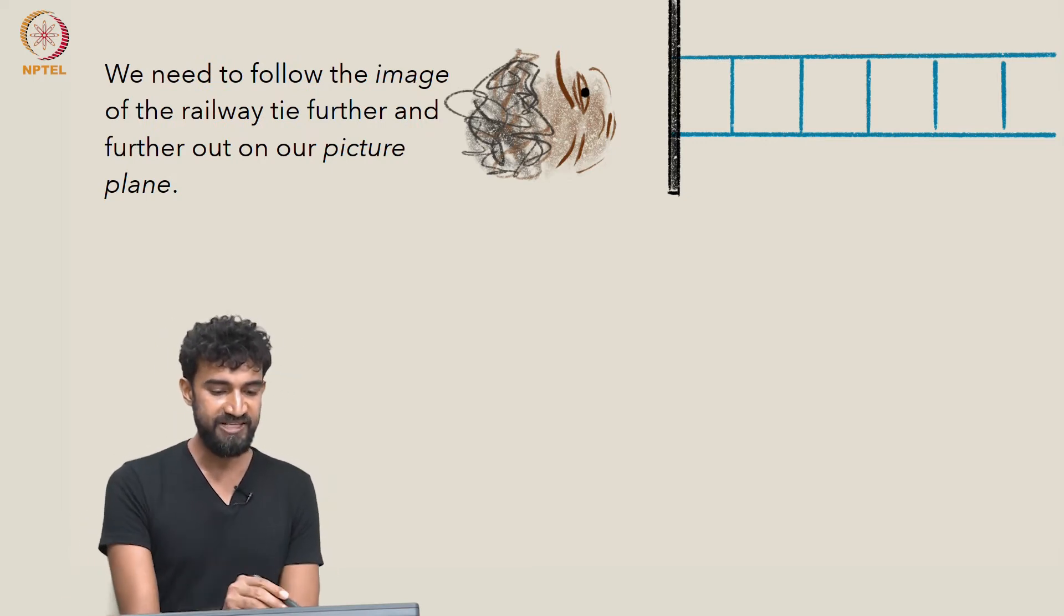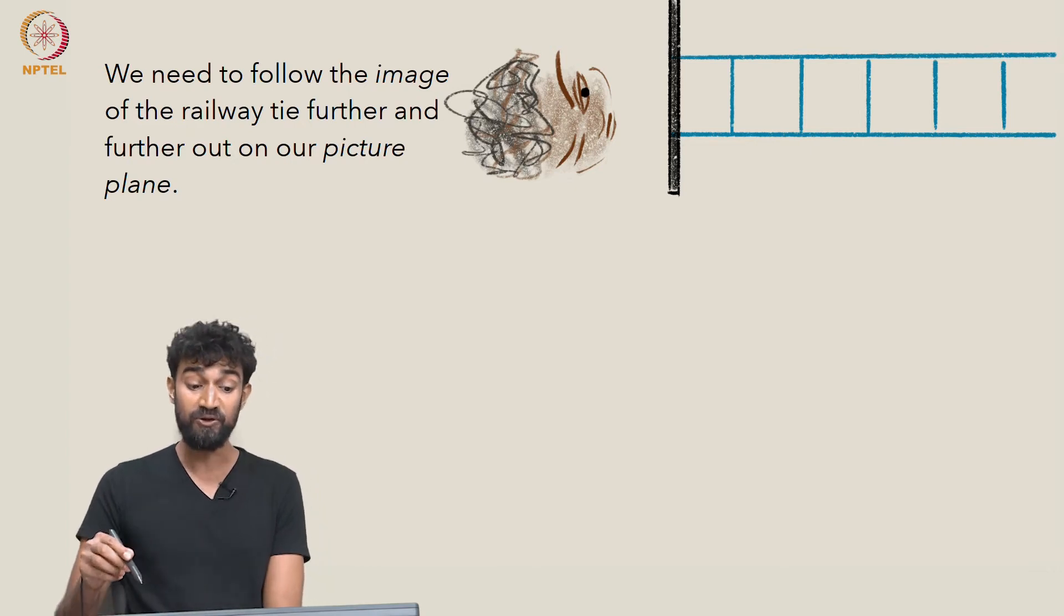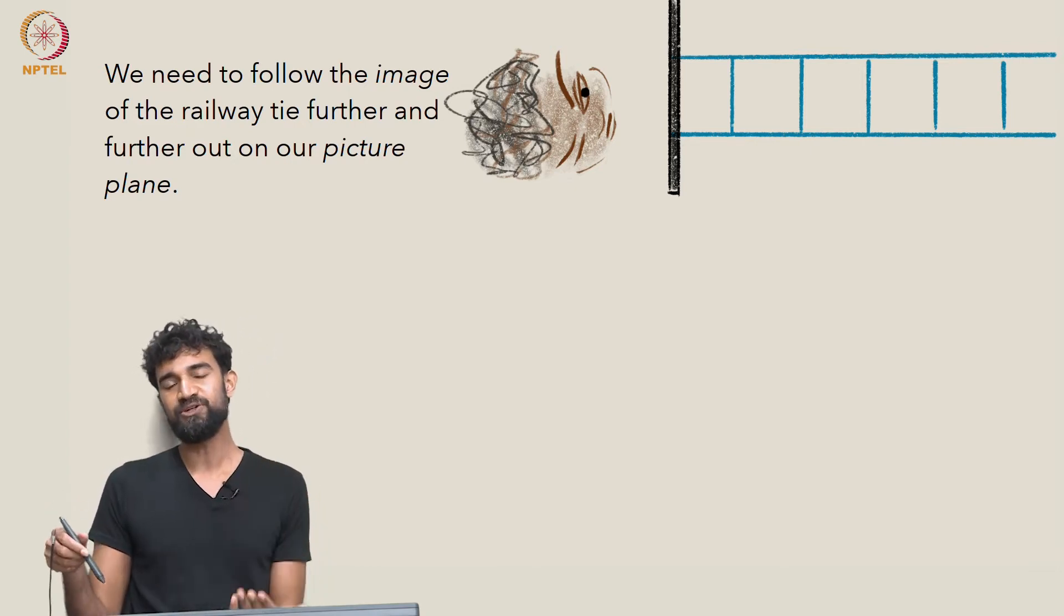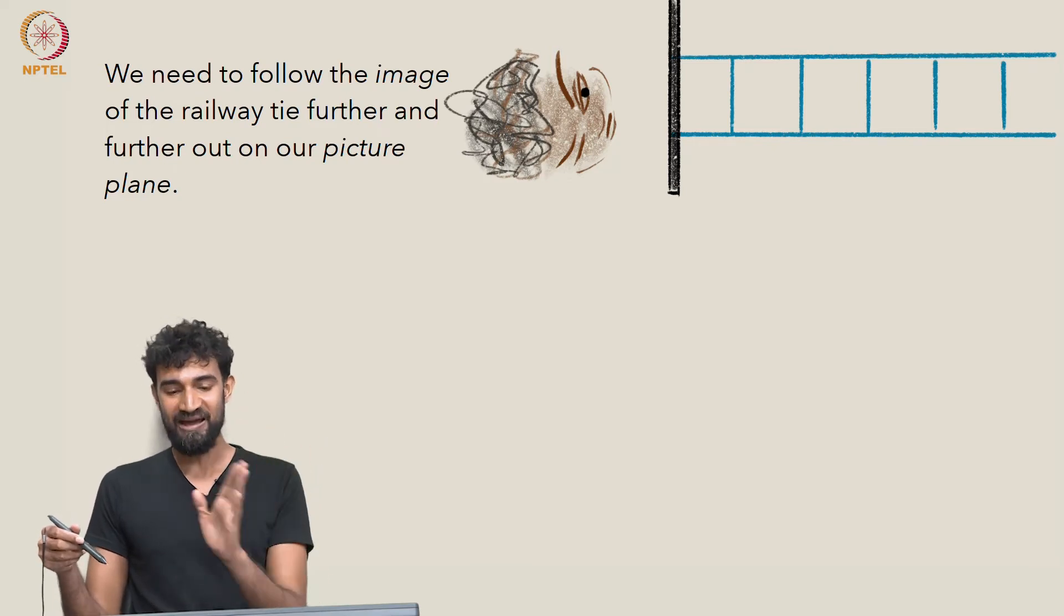And we need to follow the image of a railway tie further and further out on our picture plane in order to understand, first of all, why it doesn't terminate, and secondly, why they remain parallel.